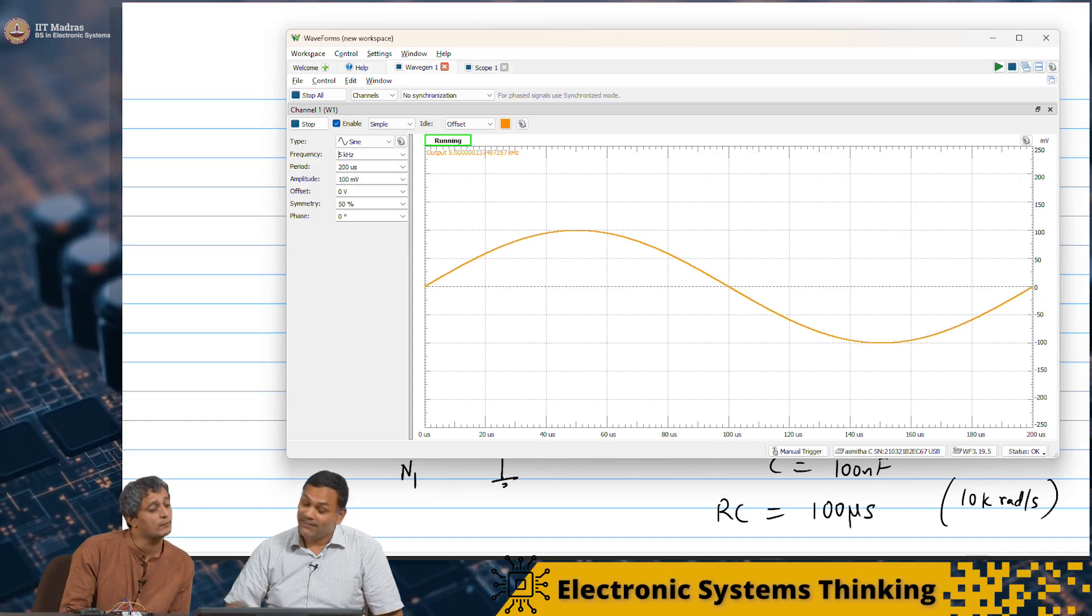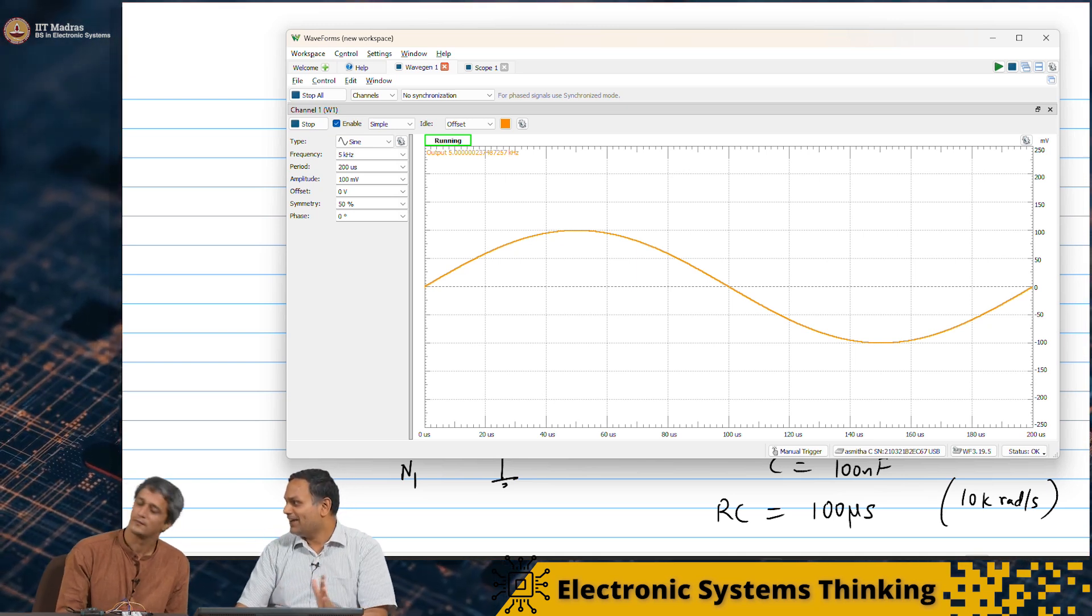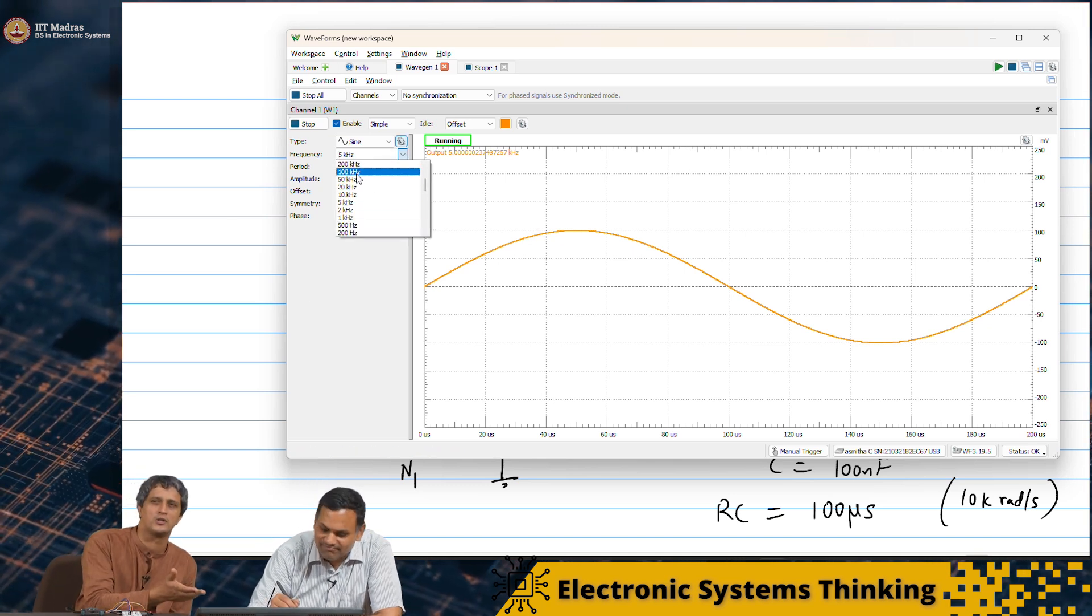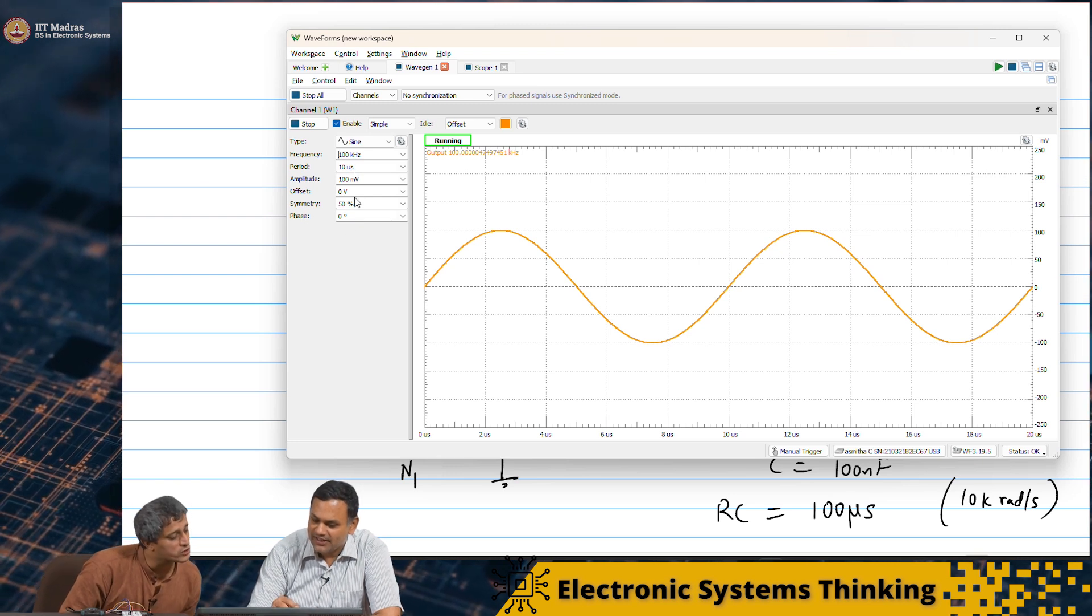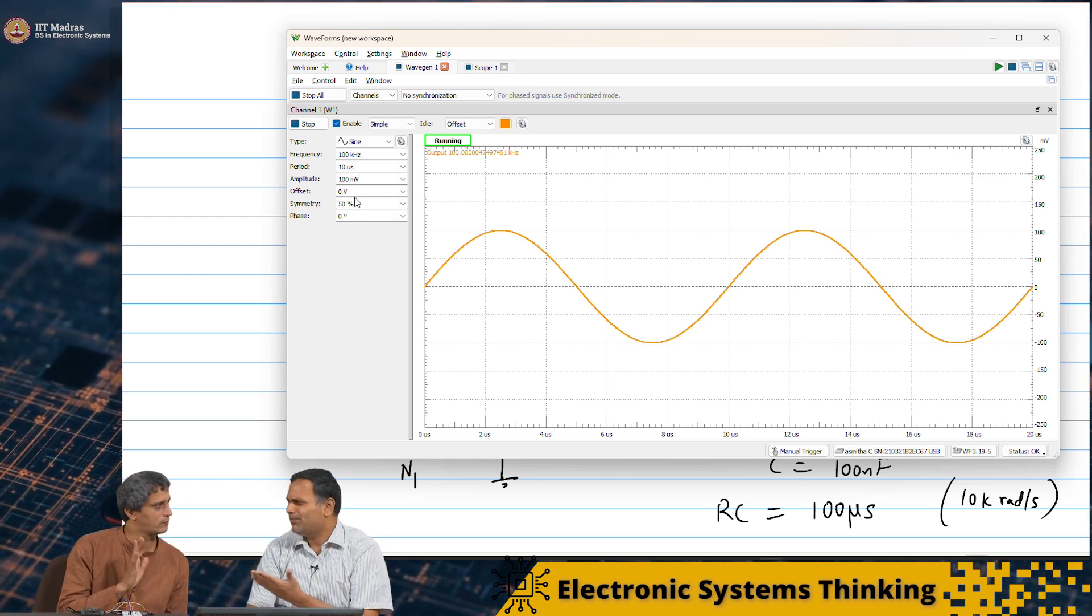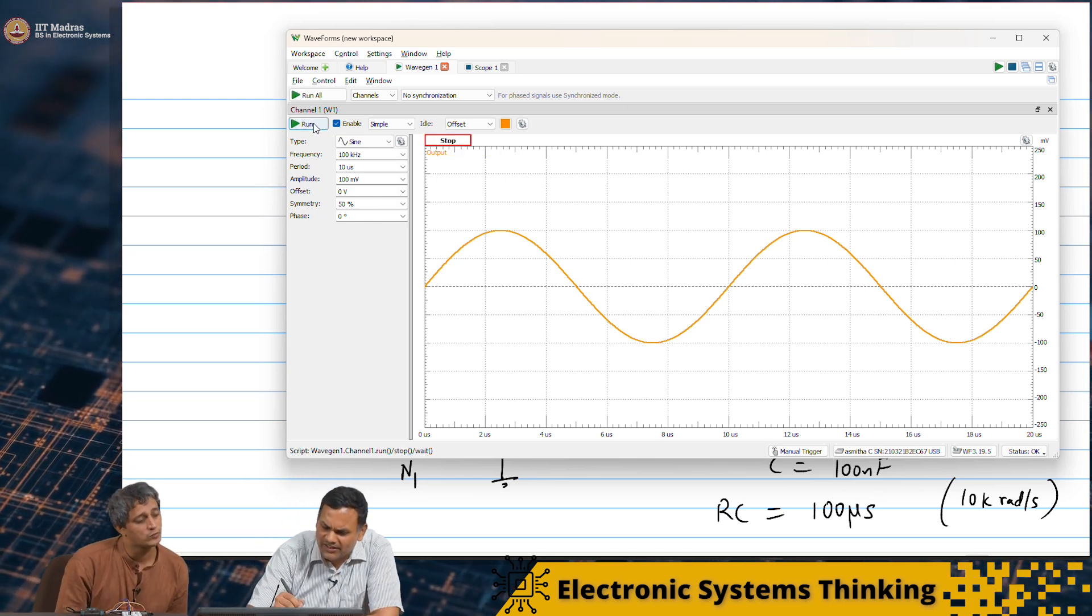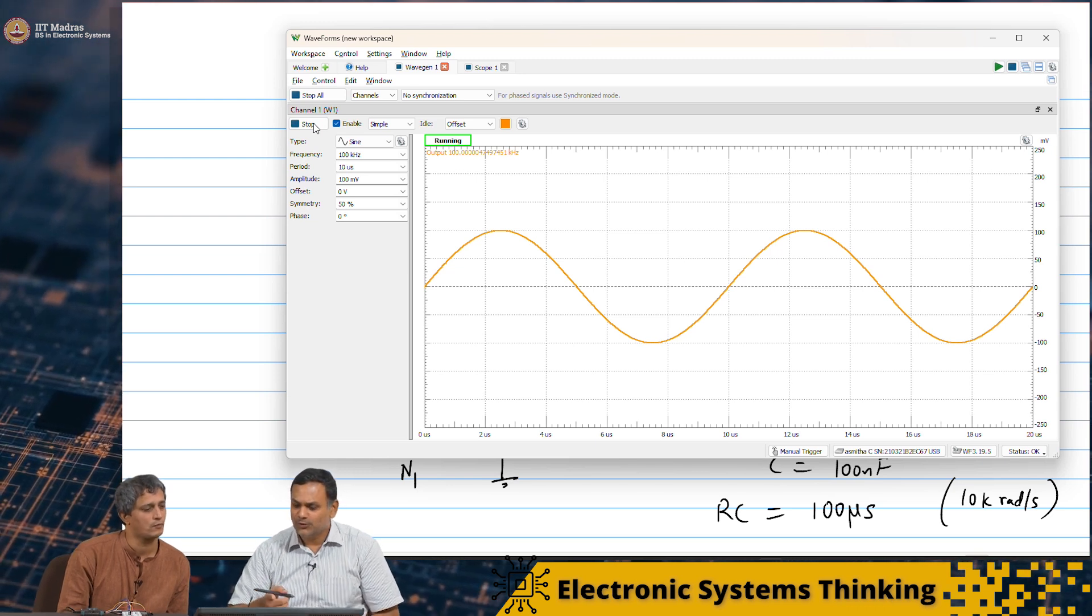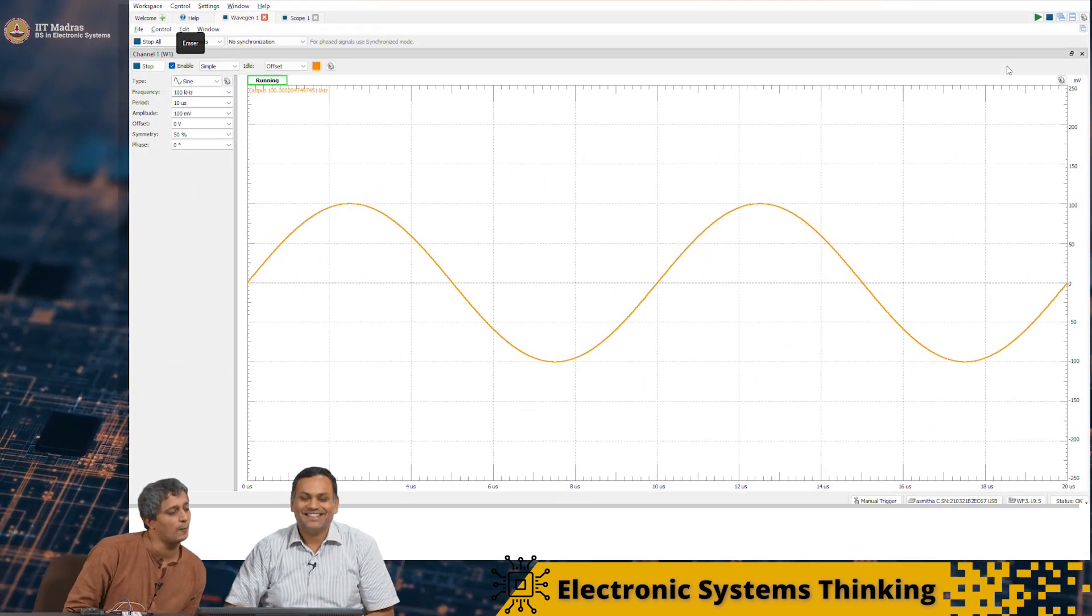So what shall we start with? Well, last time we started with very small frequencies. Shall we just try applying a very high frequency and see if that works? Let's start - we said we got some 10 kilohertz. Let's start with like 100 kilohertz. Let's do that. And what is the amplitude? It's 100 millivolts. 100 millivolts is fine. It doesn't matter, the amplitude doesn't matter. Let me start this and just make it full screen so that we can see it.